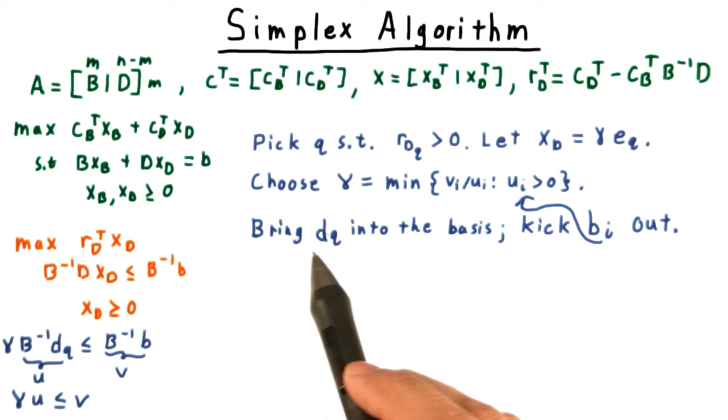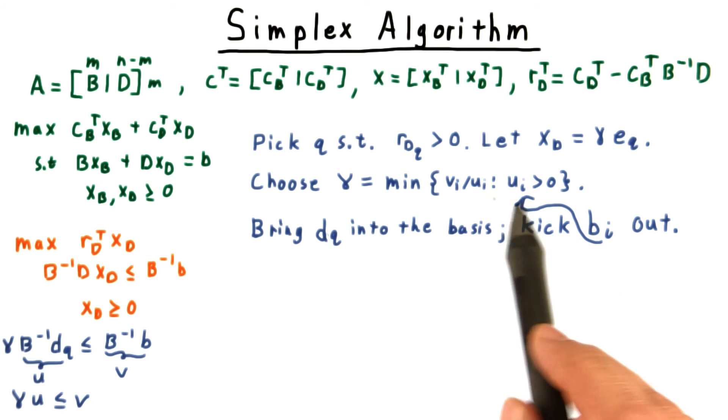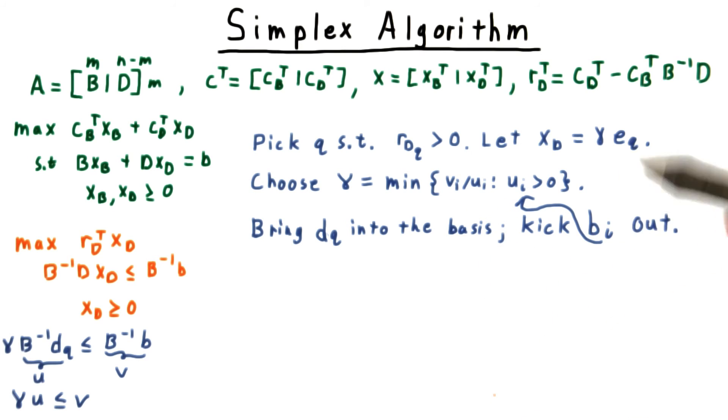We can then bring dq into our basis and kick out the column corresponding to the constraint that became tight. We then want to repeat this process over and over, getting better and better basic feasible solutions.